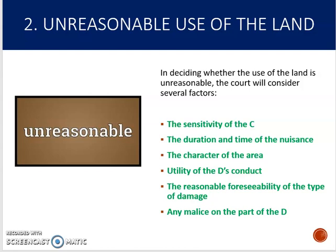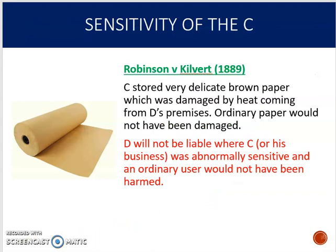The second requirement is that the claimant has to show there was unreasonable use of the land. This is quite complicated because the court uses a whole combination of factors to decide whether what the defendant was doing was unreasonable or not. We're going to look at cases illustrating all of these: sensitivity of the claimant, duration and time of the nuisance, character of the area, utility, reasonable foreseeability of damage, and whether the defendant acted with any malice.